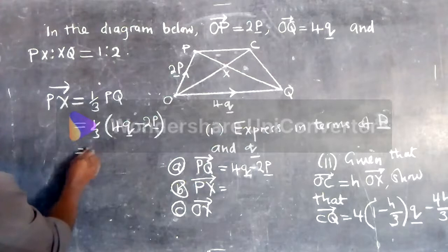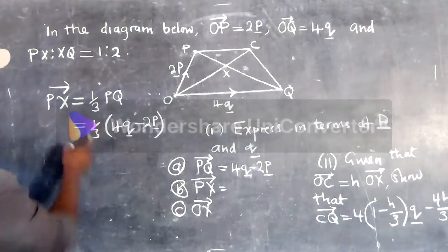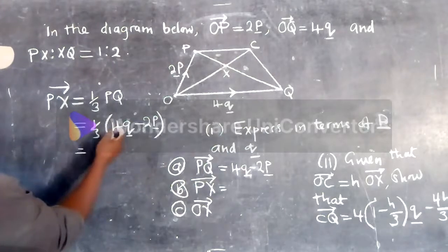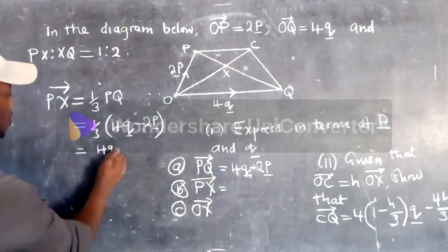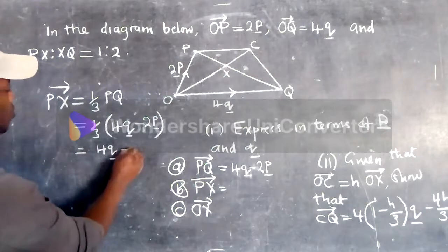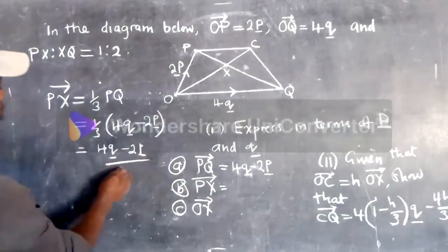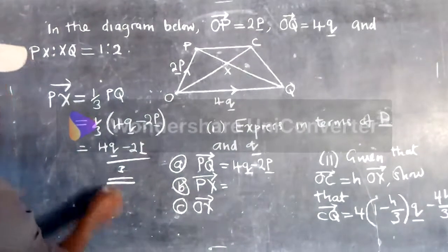And thereafter, we can distribute to multiply what is in front here. One-third by this, by this. So one-third times 4q, we get 4q over 3. One-third times negative 2p is negative 2p over 3. So this is the answer.